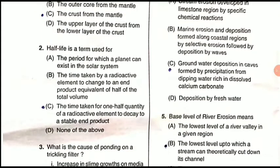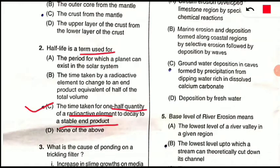Question 2: Half-life — this question asks what half-life is a term used for. Option C is correct. Half-life means the time taken for one half quantity of a radioactive element to decay to a stable end product. Radioactivity numericals are very important in Environmental Science entrances. A link is provided in the i-button — click on that to learn the concept and the simple formula to solve these questions.